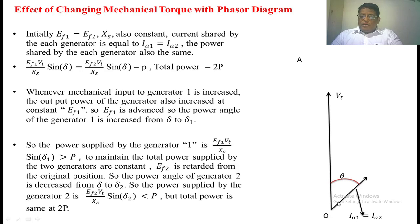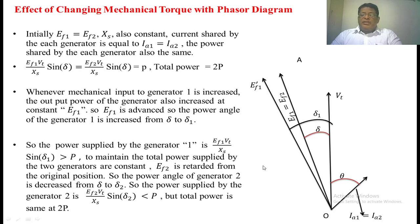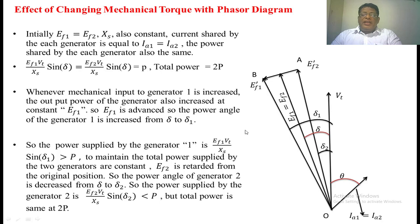Initially I1 equals I2, so the sum of these two currents equals the total load current IL. This is EF1 equal to EF initial. Whenever we increase the mechanical input to the first generator, EF1 advances from its initial position so that the power angle increases from delta to delta-prime. To maintain the total power constant, the power supplied by the second generator decreases. So the excitation voltage of the second generator, EF2, retards from the initial angle delta to delta-prime. There is now a phasor difference between EF1 and EF2, labeled AB, which is the circulating voltage.